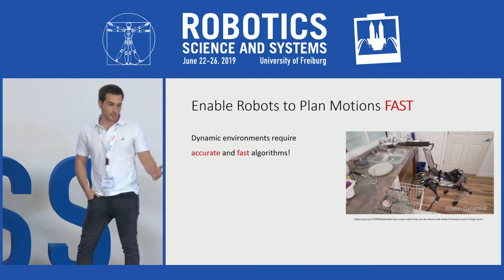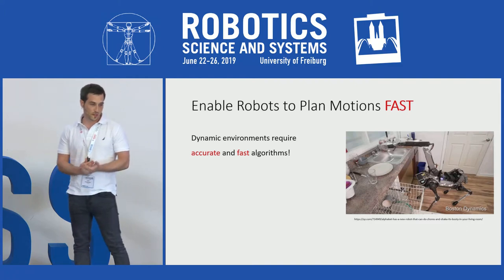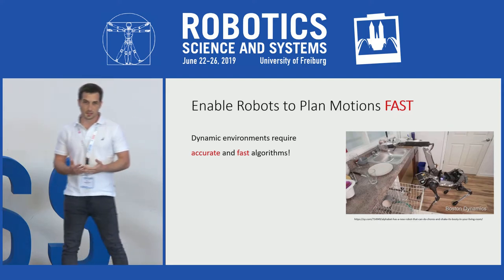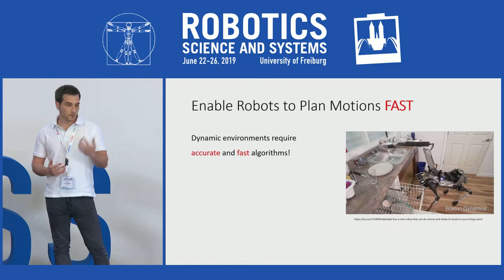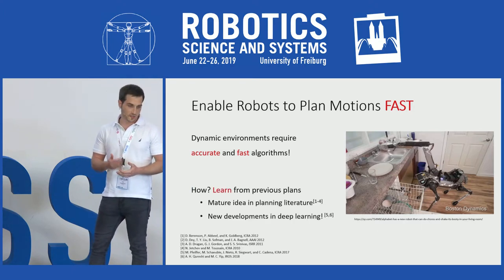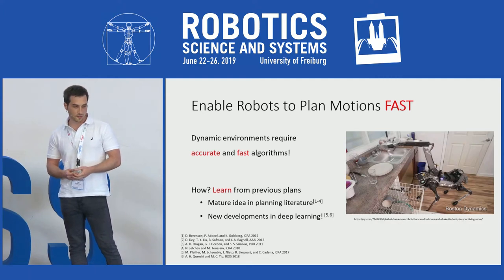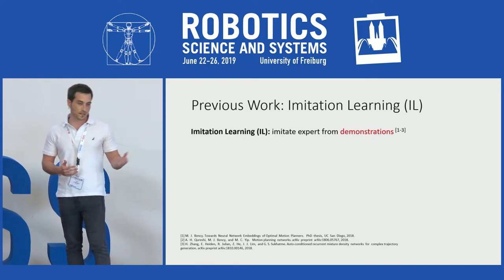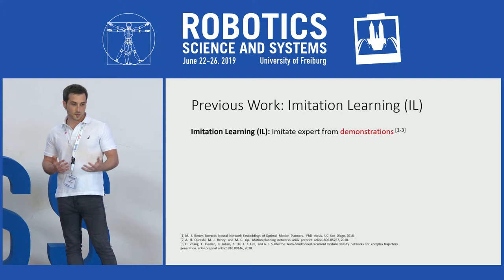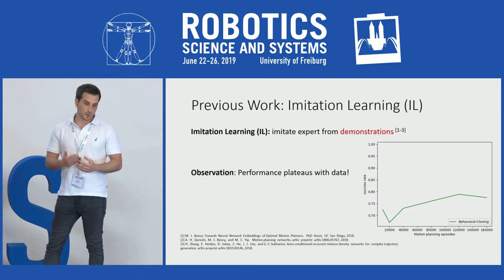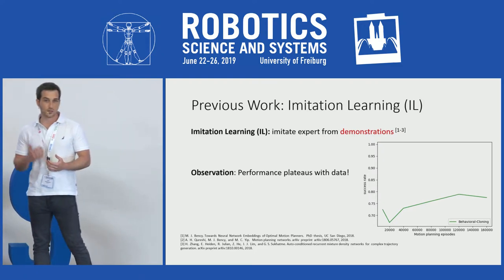In the near future, robots are going to encounter scenarios with more dynamic environments, meaning motion planning algorithms must be both accurate and fast — even real-time. Although today's algorithms are very accurate, they're still not fast enough. Our goal is to design an accurate algorithm that could also be computed in real-time. Most previous work was on imitation learning, where the goal is to imitate a motion planner from a dataset of motion plans. But we observe that performance plateaus with data and the agent doesn't reach 100% success rate. We identify the fundamental problem in motion planning that should be solved using reinforcement learning methods instead.